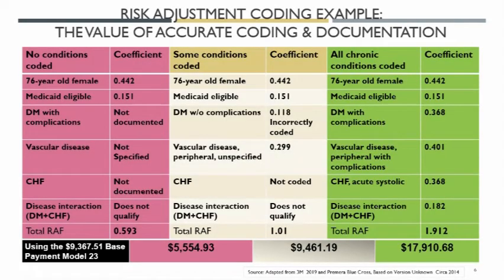Here is an example of three scenarios. The pink one is where no conditions were coded. The golden or tan one is where some conditions were coded. And the green one is where all the conditions were coded and there was actually some clinical documentation improvement interaction.